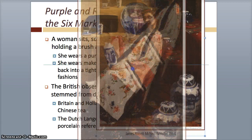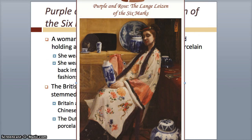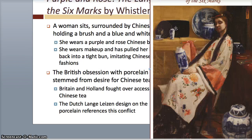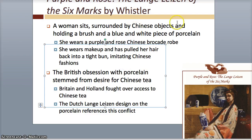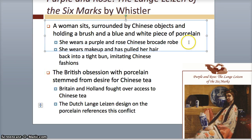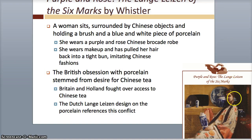Here's the picture — Purple and Rose: The Lange Lijzen of the Six Marks. A woman sits surrounded by Chinese objects, holding a brush and a blue-and-white piece of porcelain. She wears a purple and rose Chinese brocade robe, has makeup on, and has her hair pulled back into a tight bun, representing Chinese fashions. The British obsession with porcelain stemmed from a desire for Chinese tea. Britain and Holland at the time were fighting over this Chinese tea, and the Dutch lange lijzen design on the porcelain references or symbolizes this concept.